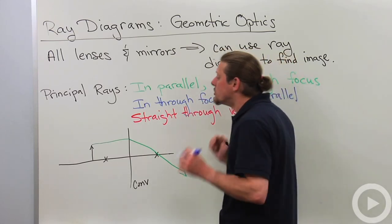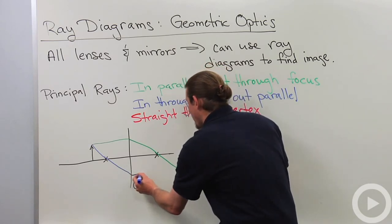Second one: in through focus, out parallel. So now I'm going to use the fact that I've drawn a focus on the other side also. In through focus, out parallel. Now notice that these guys are already crossing right there. So I've already located my image.